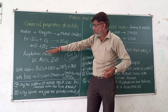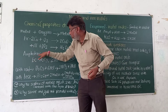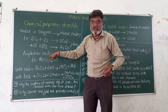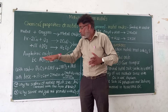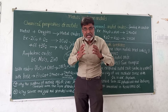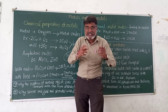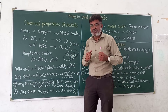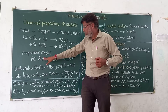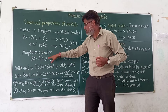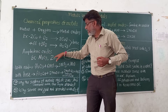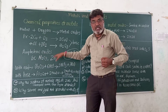Then the next point: amphoteric oxides. What are amphoteric oxides? This is an exception to the general nature of metal oxides. Amphoteric means both — they react with acids and they also react with bases. Examples of amphoteric oxides are Al2O3 (aluminium oxide) and ZnO (zinc oxide).